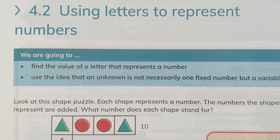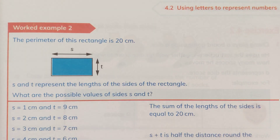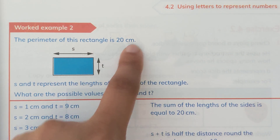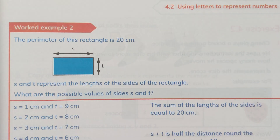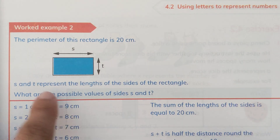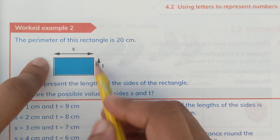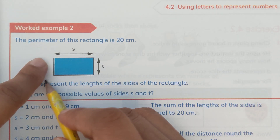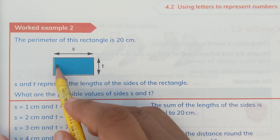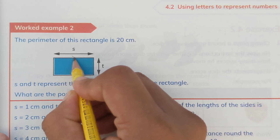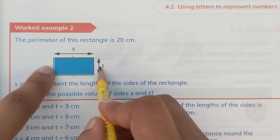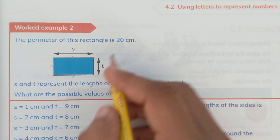Let's see what we have to do in this exercise. Here we have a very good question in worked example number two, where the perimeter of this rectangle is 20 centimeters. We know that the perimeter represents the sum of all the outer boundaries — the sum of all sides outside. In a rectangle we have a pair of opposite sides that are equal to each other, so we have two lengths and two breadths.